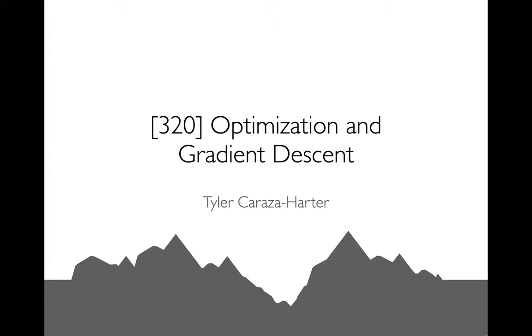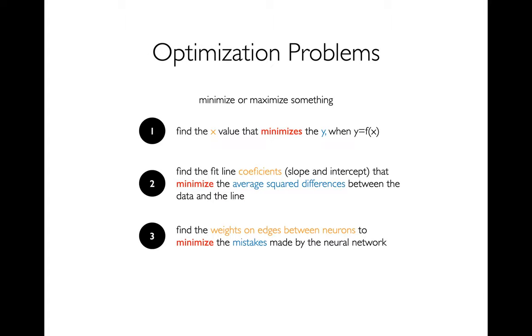In this lecture, we're going to be talking about optimization, and in particular, we're going to be learning a very important algorithm for optimization called gradient descent. So whenever we're talking about optimization, we're generally trying to either minimize something or maximize something.